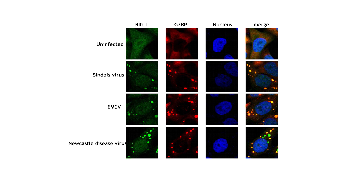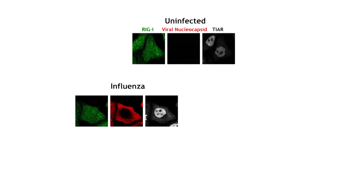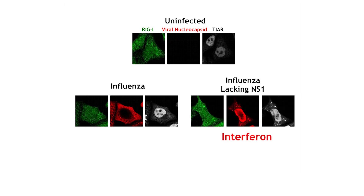However, not all viruses induce antiviral stress granules. For example, influenza virus infection does not induce antiviral stress granules. Interestingly, influenza virus deficient of NS1 protein efficiently induces antiviral stress granules and interferon production. In summary, NS1 of influenza virus is critical for inhibiting antiviral stress granules and interferon to secure viral replication.